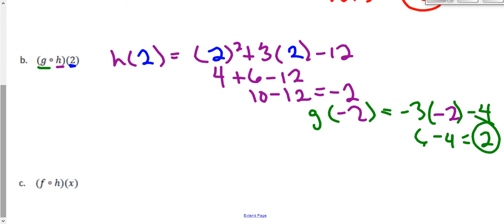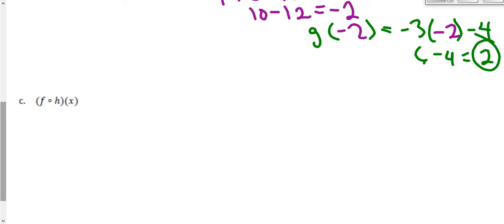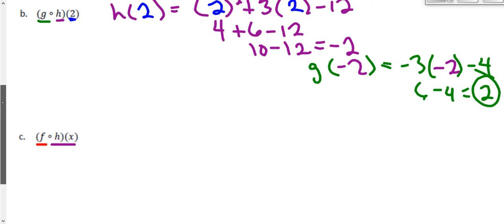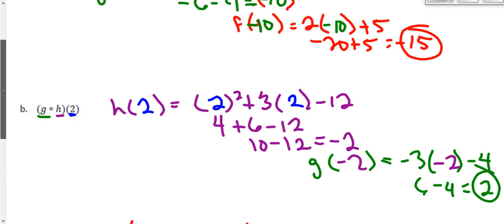Now my very last job here is to find f of h of x. And this time I do not know what x is. So x is going to stay the letter x. And my job is just to take the function h of x and plug it into f. So I'm going to start with my function h of x, which is x squared plus 3x minus 12. And I have to take this entire function and plug it into the function f of x.